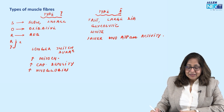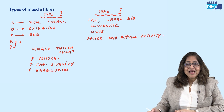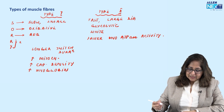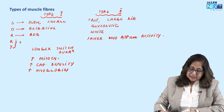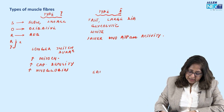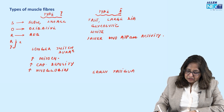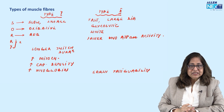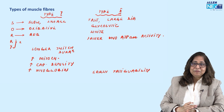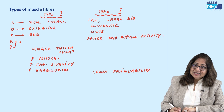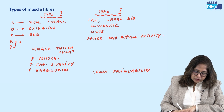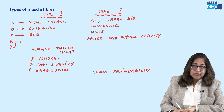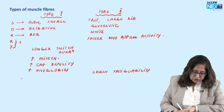Which fiber will have early fatigability? Type 2. Glycolytic metabolism means accumulation of lactic acid, so early fatigability occurs in type 2. Delayed fatigability is in type 1. That means type 1 muscle fibers are used for slow sustained contractions.